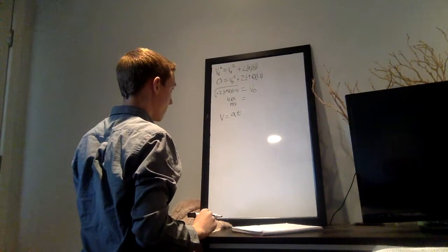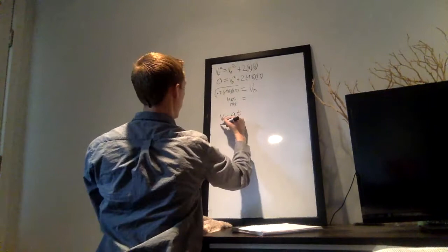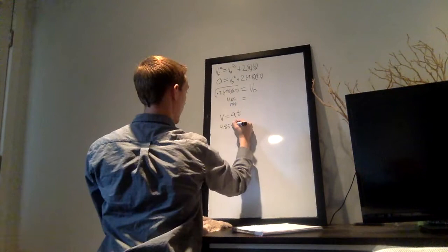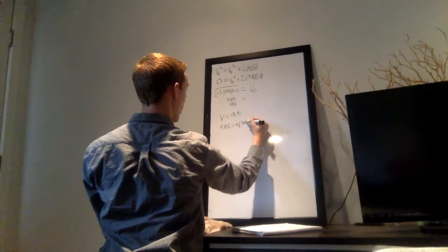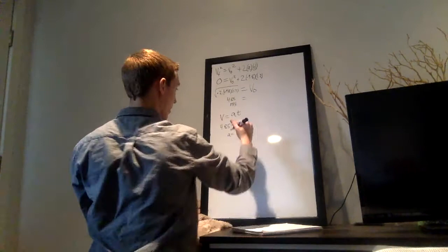So we know that his velocity at the end of the jump was 4.85, which we just got from this. And that's going to equal acceleration times the 0.3 seconds that it gave us. We solve for A and find that it is approximately 16.2 meters per second squared.